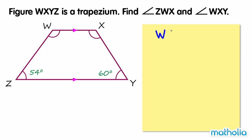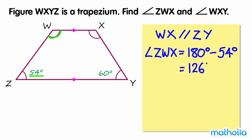In this trapezium, WX is parallel to ZY. Angle ZWX can be found by subtracting 54 degrees from 180 degrees. 180 degrees minus 54 degrees equals 126 degrees, so angle ZWX equals 126 degrees.